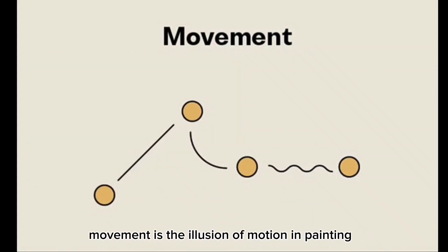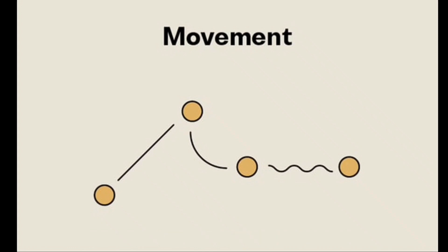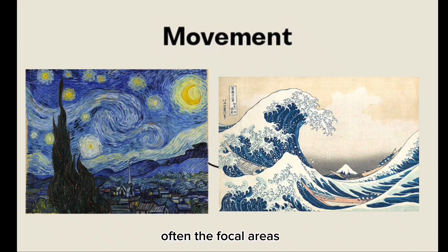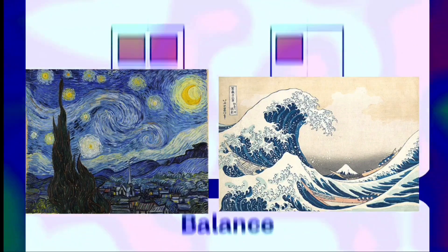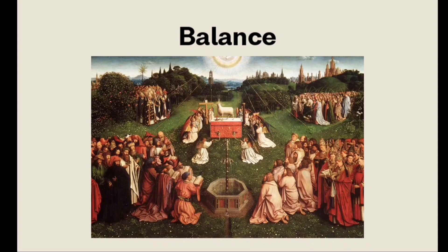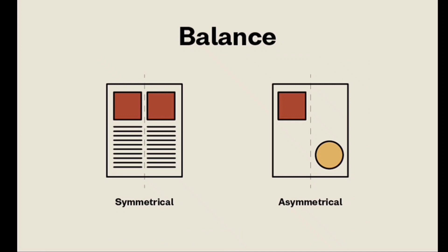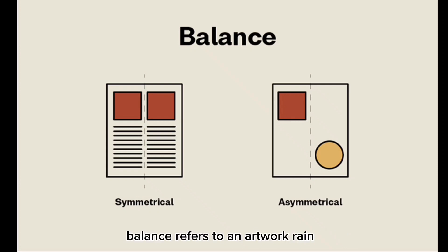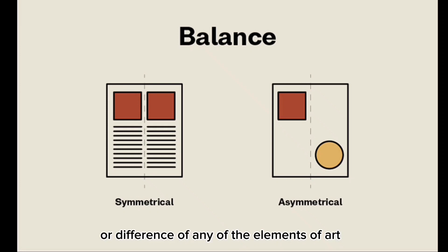The second principle is movement — the illusion of motion in painting, sculpture, or design. Movement is the path that the viewer's eye takes through a work of art, often toward focal areas, directed along lines, edges, shapes, and colors. Third is balance, which refers to the visual weight in a picture and the even distribution of elements in an artwork. Balance can be symmetrical, where both sides have the same elements in the same position, or asymmetrical, where balance is achieved through contrast or difference of elements.